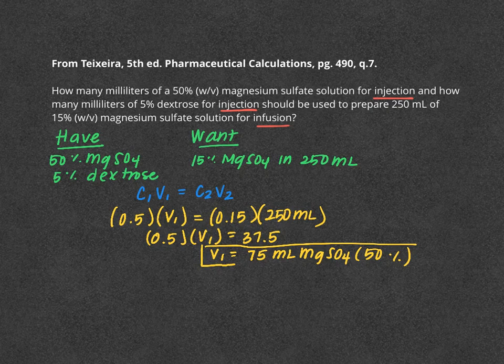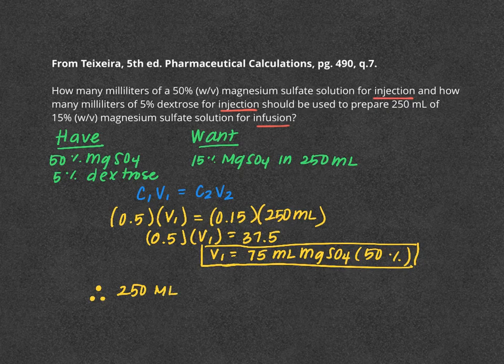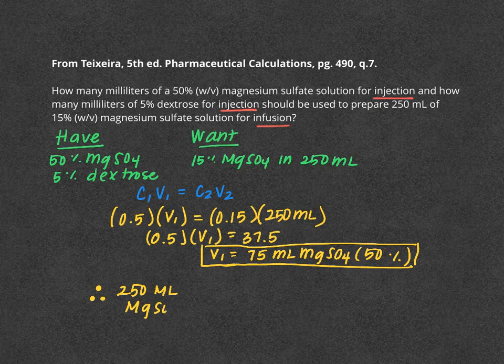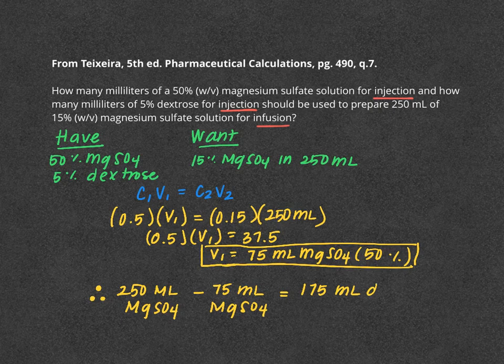So the other part of this was how much dextrose do we need? Pretty simple, we can just set up a quick subtraction because we know that our total volume was 250 ml of the 15% magnesium sulfate minus our calculated volume of the 50%. And we do that and we get 150 milliliters of dextrose.